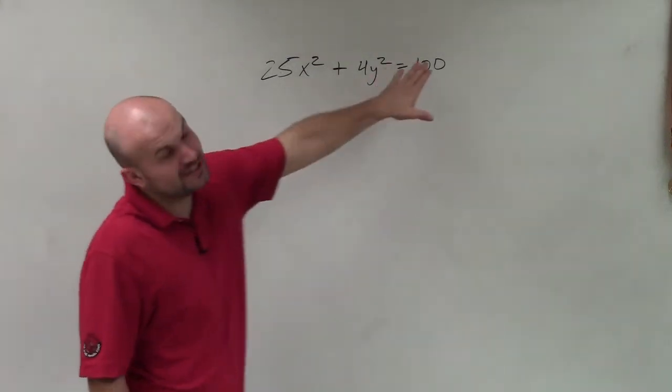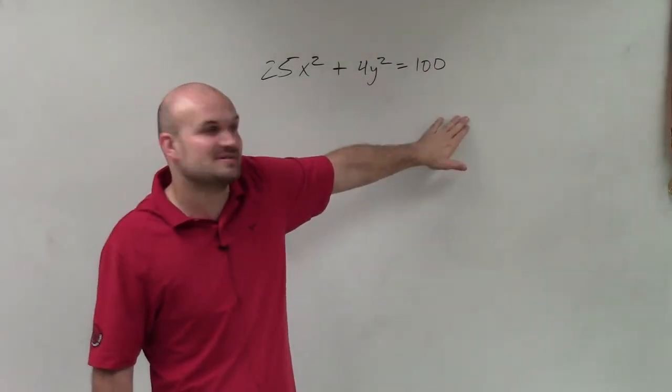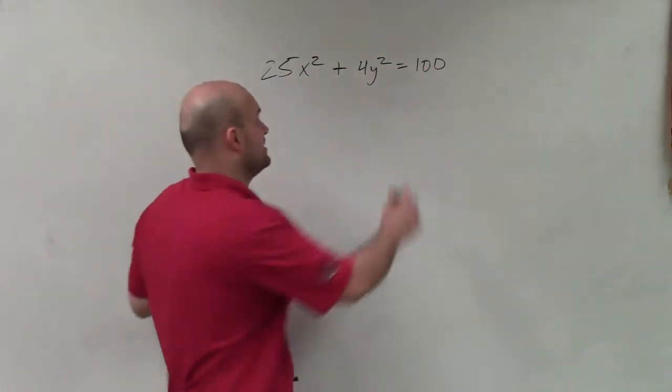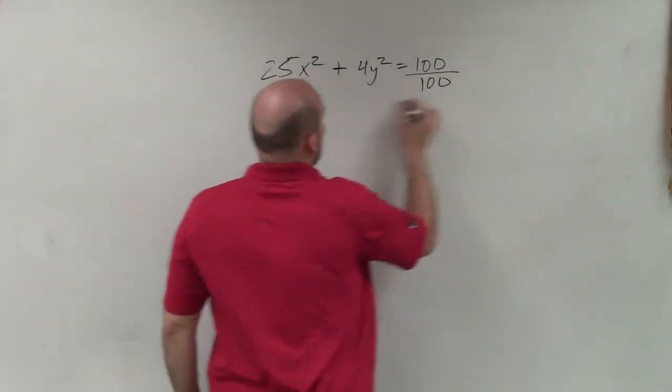To do that, the first thing I need to do is set my ellipse equation equal to 1. So I'm going to divide by 100 on both sides.